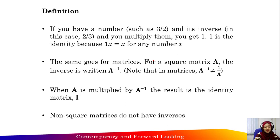The definition of inverse matrices. If you have a number such as 3 over 2, its inverse is equal to 2 over 3, and when you multiply them you will get 1. The number 1 is the identity because 1 times x equals x for any number x. The same goes for matrices.